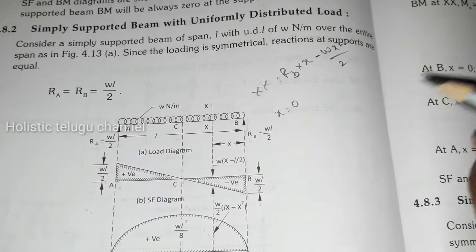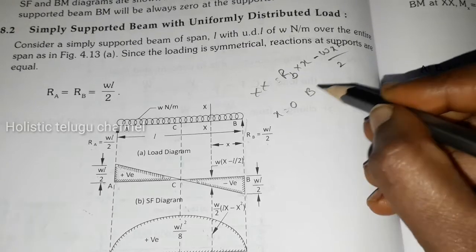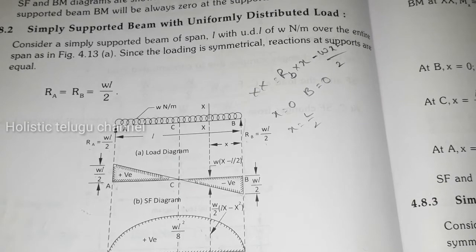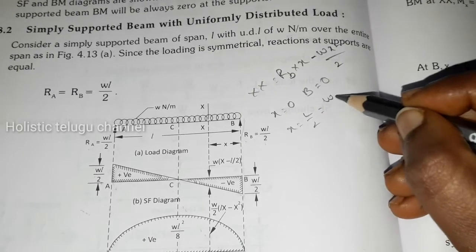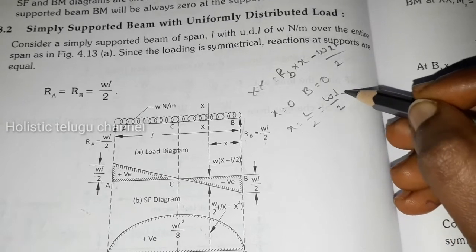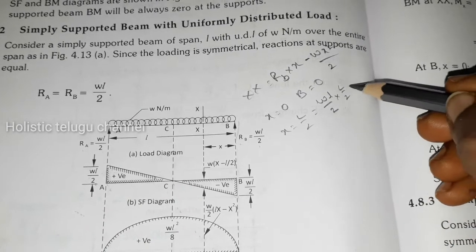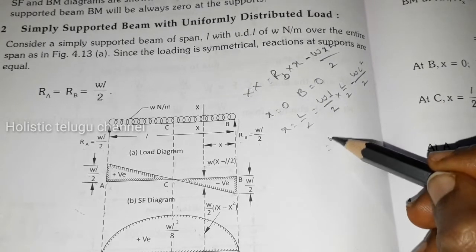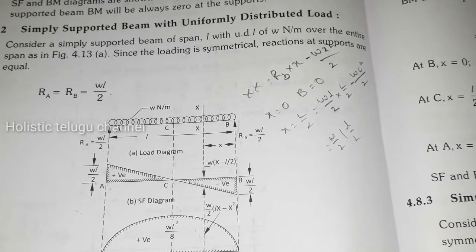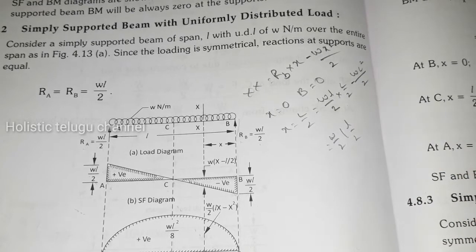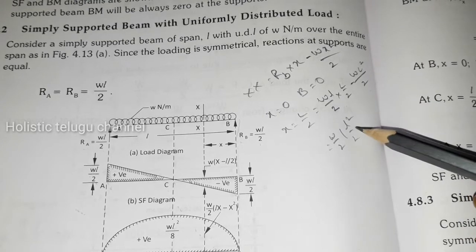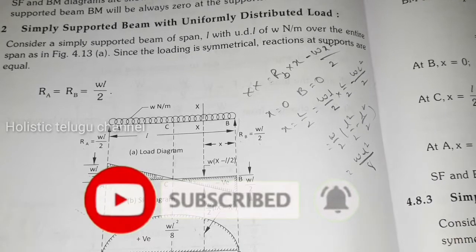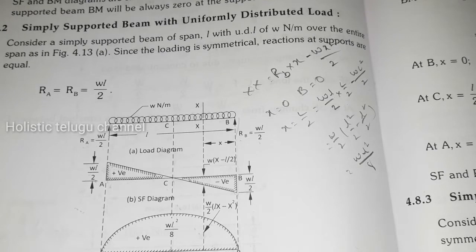When X is equal to 0, bending moment equal to 0. At C point, X equal to L by 2, so we get R_B that is WL by 2 into L by 2 minus WX² by 2. So total W by 2, minus, L by 2 square minus L² by 2, that is WL² by 8.